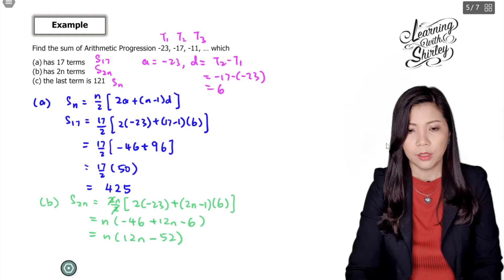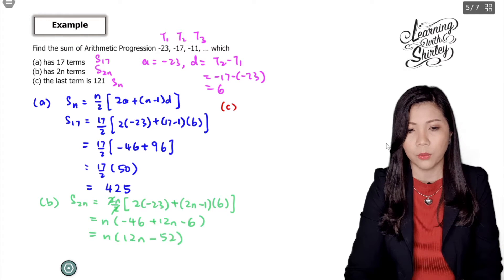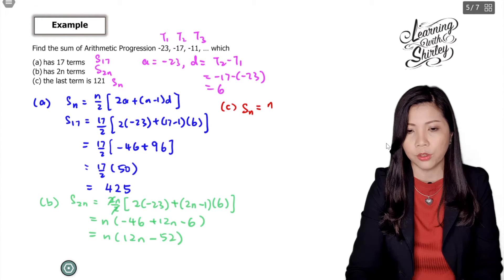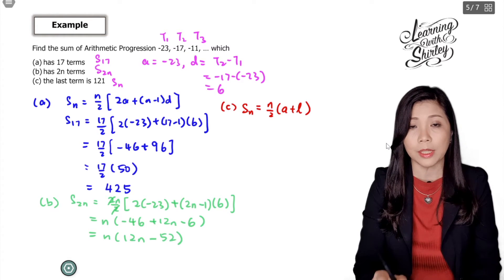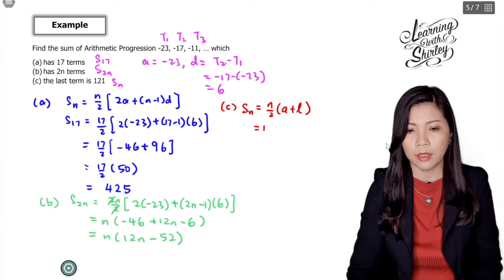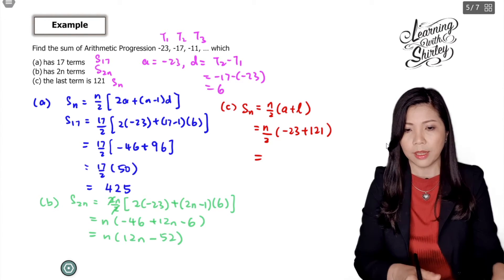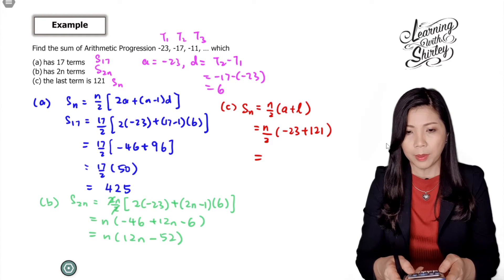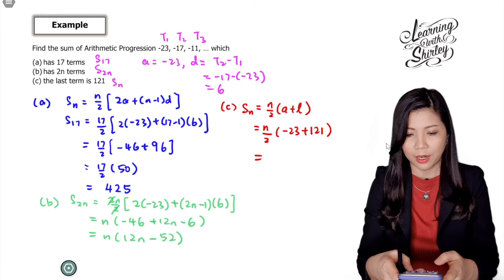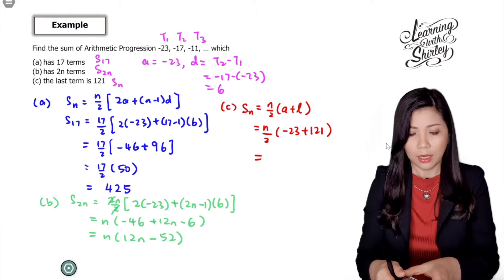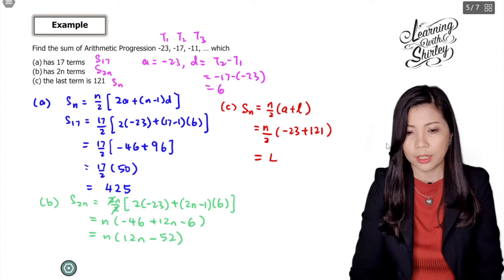For (c), the last term is 121, so we use Sn equals n over 2 times (a plus l). Substituting a equals negative 23 and l equals 121. The answer will be in terms of n because n is unknown. So 121 minus 23 gives 98, then divided by 2 gives 49. Therefore, the final answer is 49n.